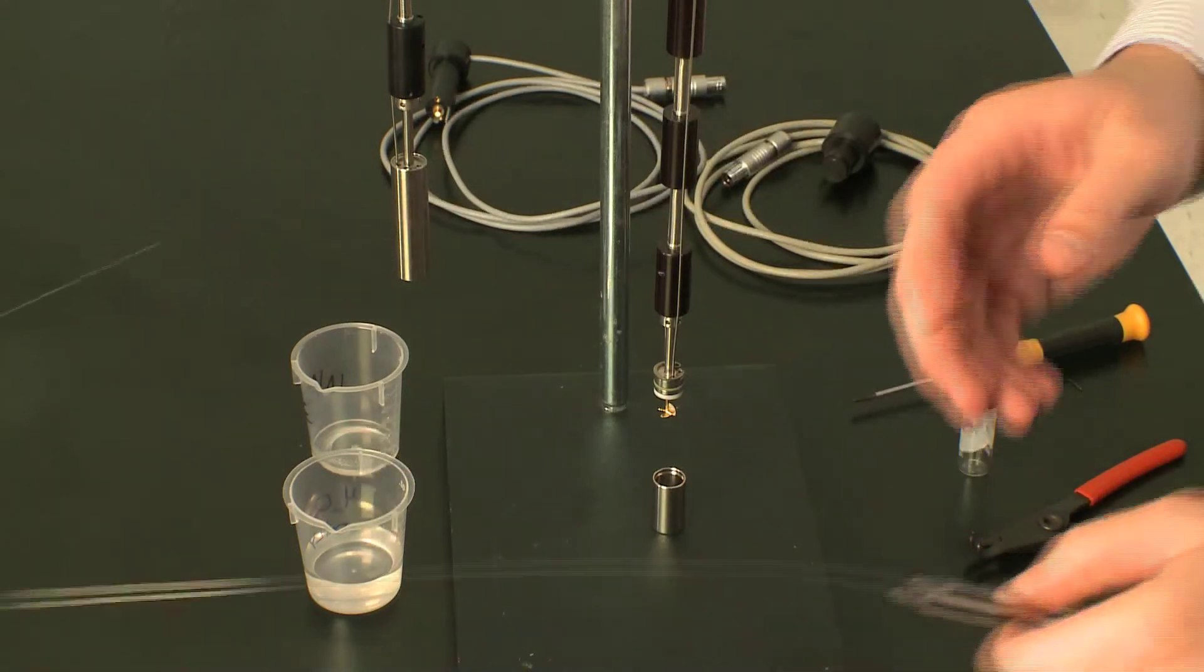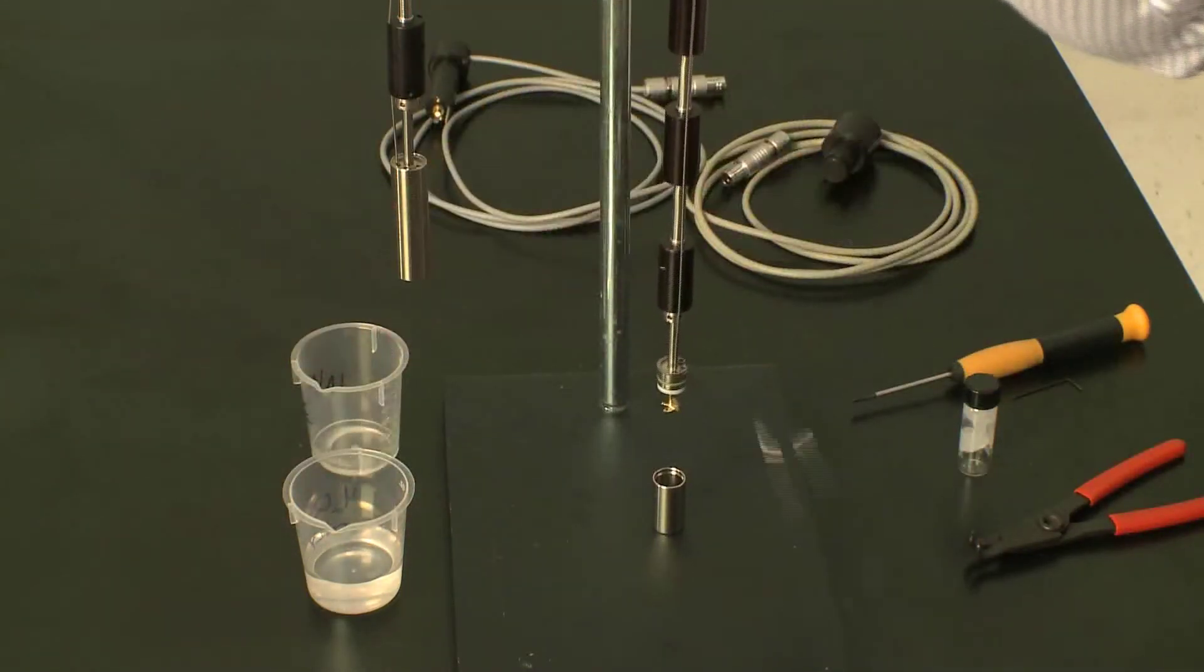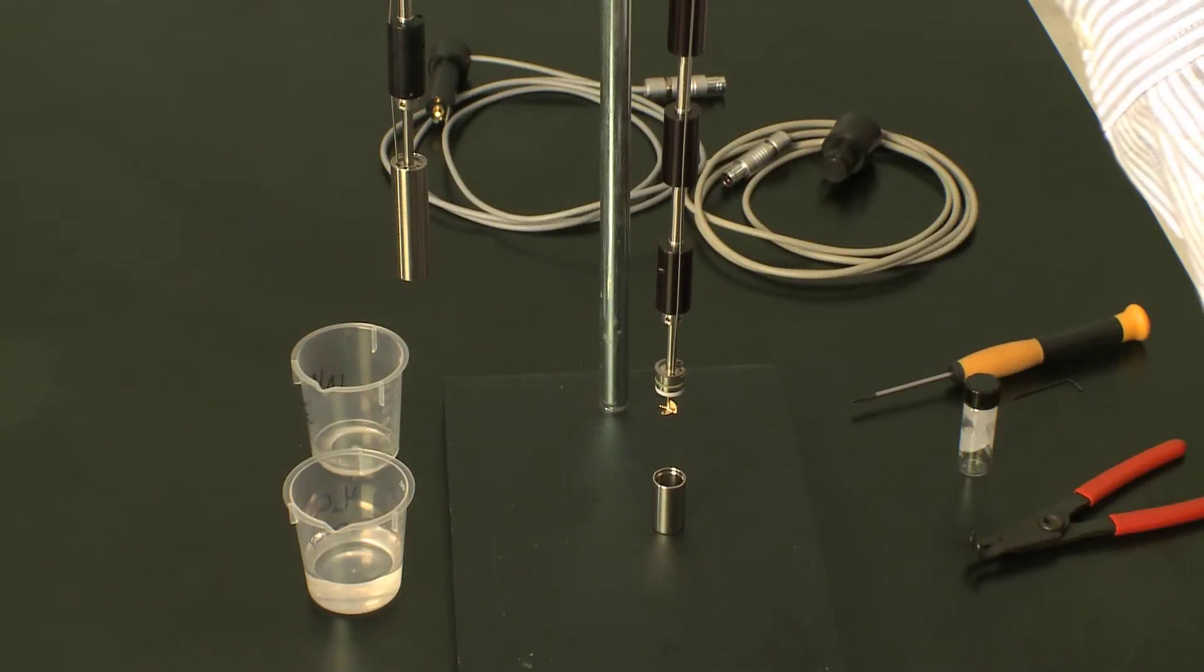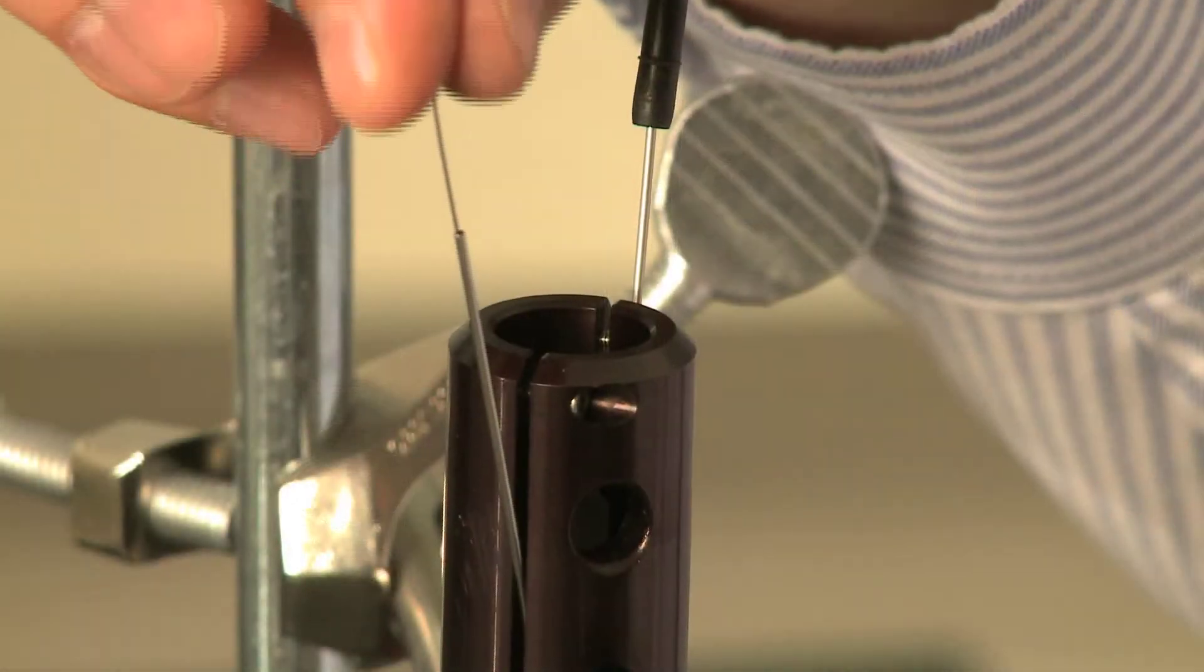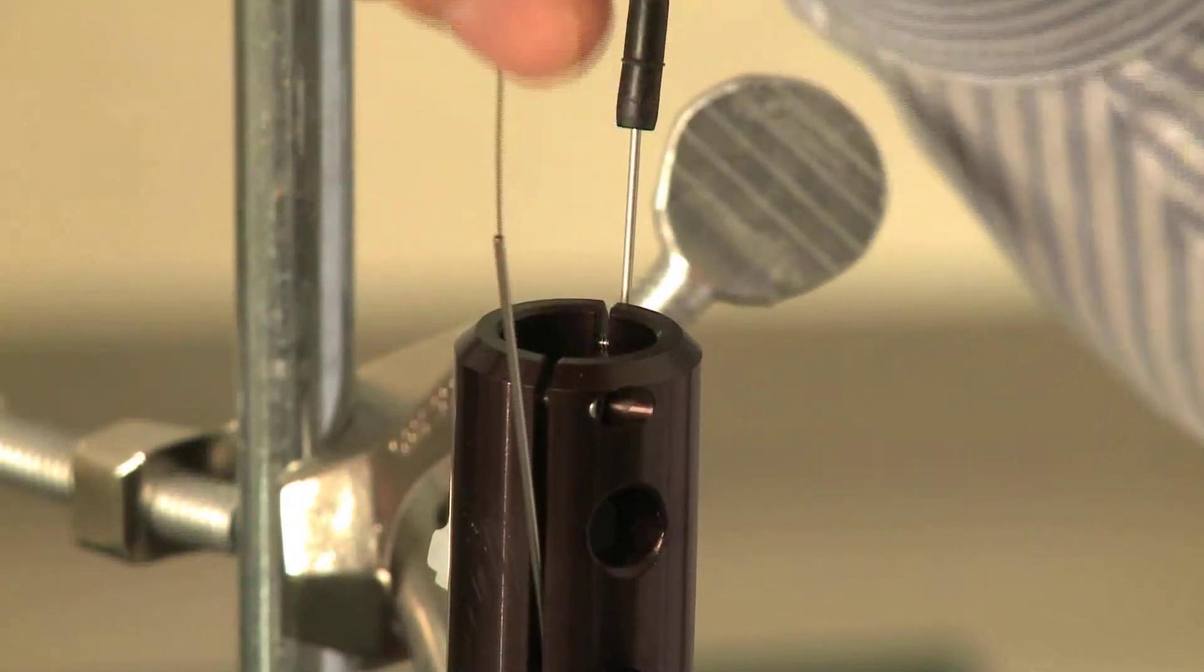Next you need to adjust the height of the syringe cannula with respect to the stirrer itself. Now that I have my stirrer in place, I can place the syringe cannula down the guide tube.